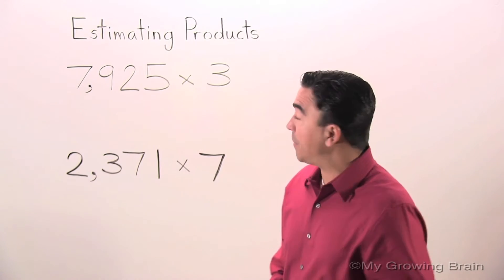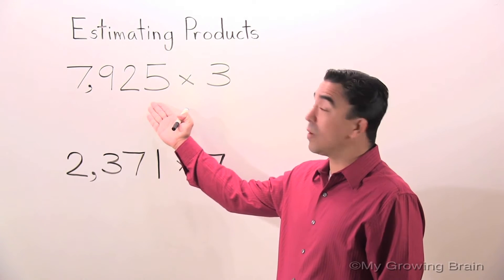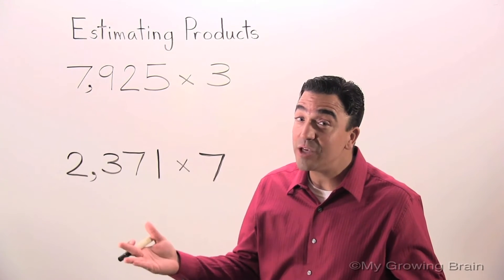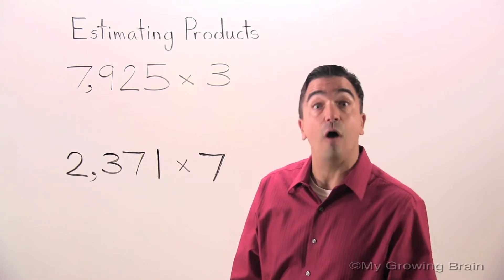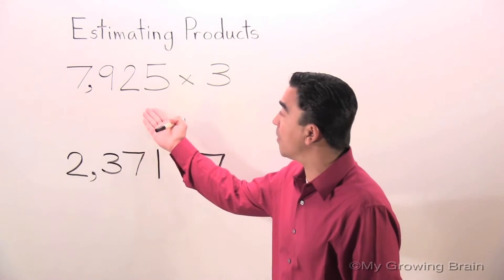The first step I'm going to do is round 7,925 to the nearest thousand. Now, if you're having an issue with rounding, please go back to one of our earlier lessons on rounding. Here we go. Back to this problem.